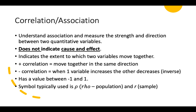Correlation also indicates the extent to which two variables move together, whether they move together in parallel or whether they have an inverse relationship. If you have a positive correlation, it tells us that the variables actually move together in the same direction, while a negative correlation occurs when one variable increases and the other one decreases. That is what we call an inverse relationship.